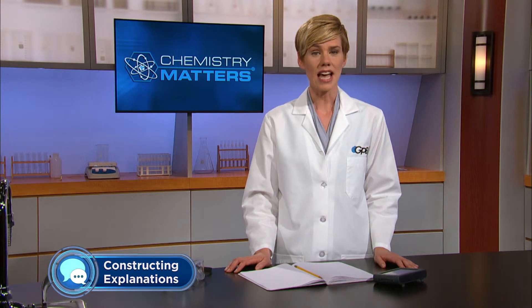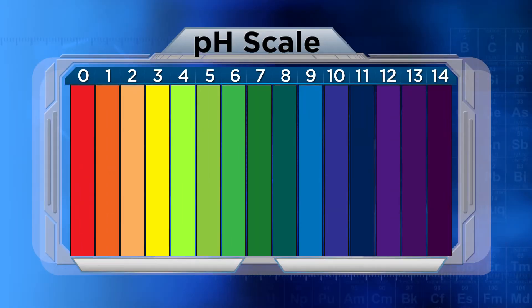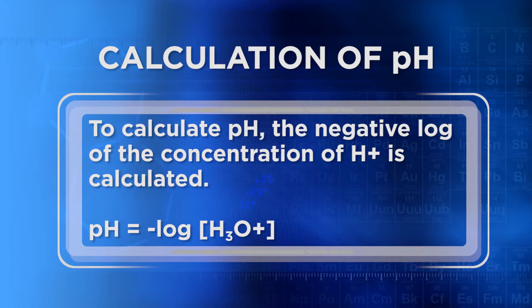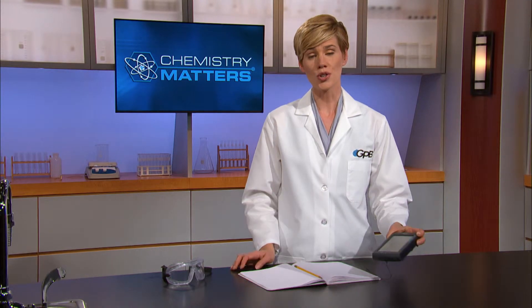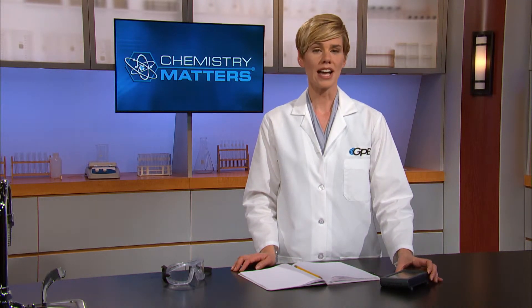Because concentrations of H⁺ are often very small, scientists created the pH scale — a logarithmic scale ranging from 0 to 14 — to represent those tiny concentrations more easily. To calculate pH, the negative log of the concentration of H⁺ is calculated. If you aren't familiar with calculating logarithms, remember that a scientific calculator can help you. The greater the number of hydroxide ions present, the larger the value of pH. As the number of hydrogen ions increases, the pH value will decrease.